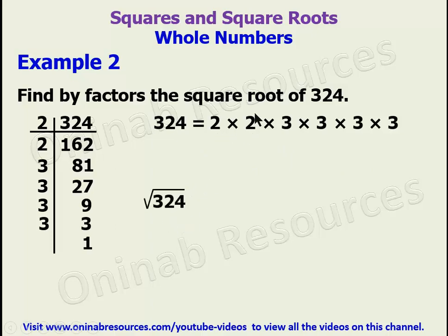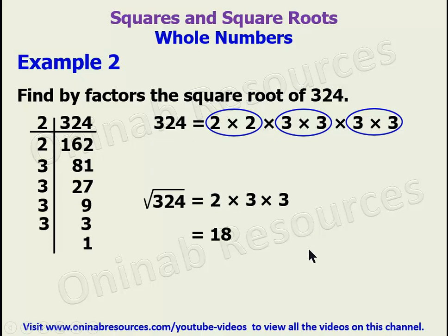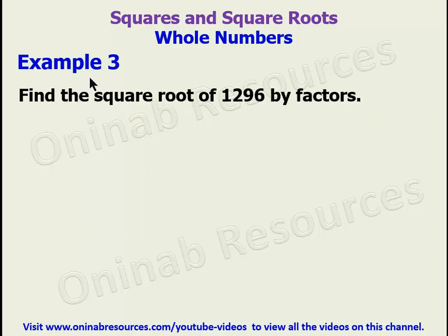To get the square root, we group the same numbers into pairs of two. We group the two 2s together, and then group the first two 3s together and the last two 3s together. From each grouping we pick one number: we pick 2, then 3, then 3. So we have 2 times 3 times 3, which is 2 times 9, giving us 18. The square root of 324 is 18.